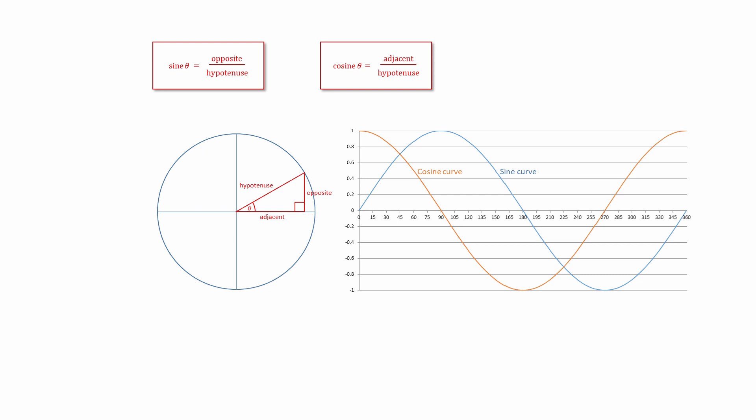There's a third trigonometric function worthy of mention now, namely tangent. The word tangent derives from the Latin word tangere, meaning to touch. Strictly speaking, a tangent is a line touching a curve at a single point, and that line has the same slope as the curve at the point of contact. This line is the tangent of the point at which the hypotenuse of the triangle also touches the circle. Notice that the tangent line is perpendicular to the hypotenuse, and if we extend the adjacent side of the triangle, then we've constructed a new, larger right-angle triangle. And in trigonometry, it's the line segment that makes up the opposite side of this triangle that we refer to as the tangent of theta.